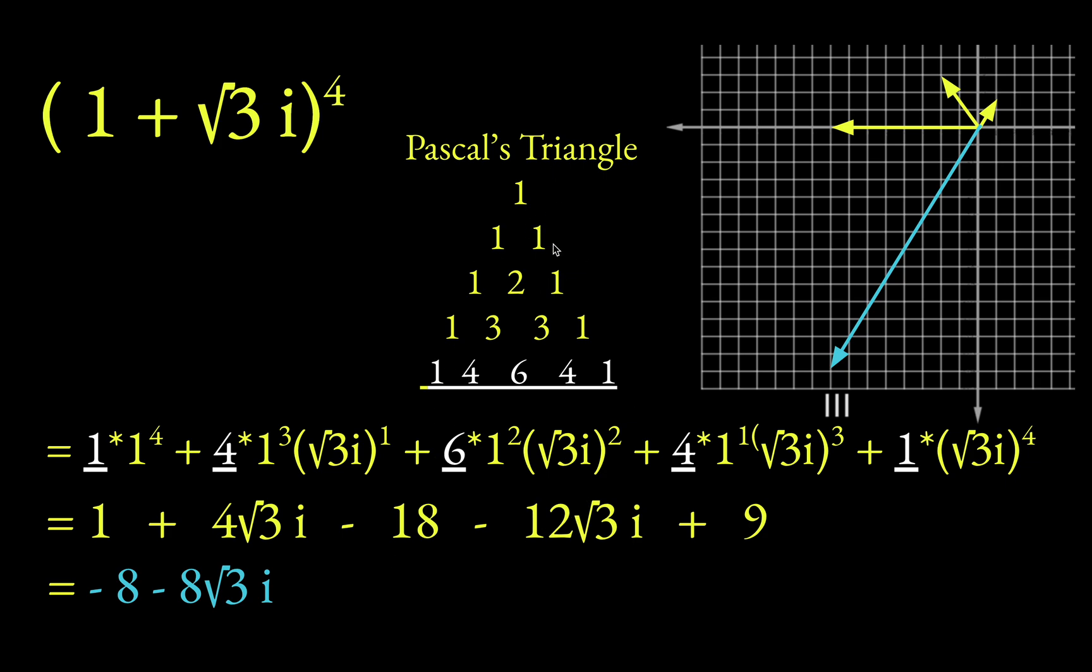Get used to using Pascal's triangle. Again, begin with a 1, two 1s underneath, and then start this pattern where you add two numbers and then kind of diagonally down, put their sum. So here, for instance, 1 plus 2 will give you 3, and 2 plus 1 gives you 3.